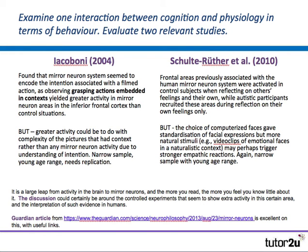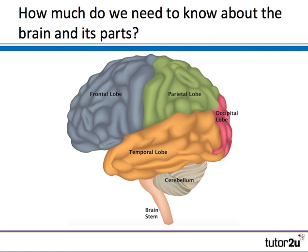The discussion could be around controlled experiments showing extra activity in the prefrontal motor cortex. There's a Guardian article from August 2013 that is also excellent on this. The question then comes: we are not biologists — how much do we need to know about the brain? Students do need to know about the four lobes and also a bit about the internal structures.